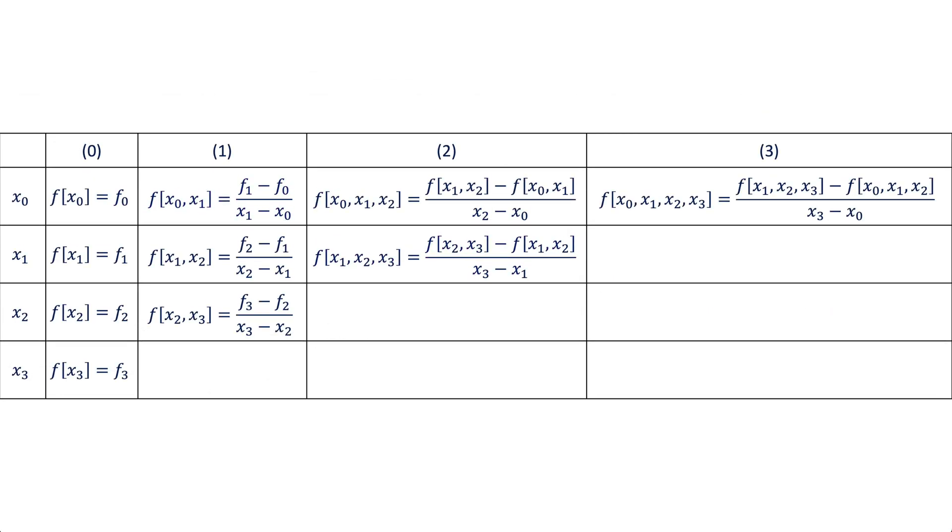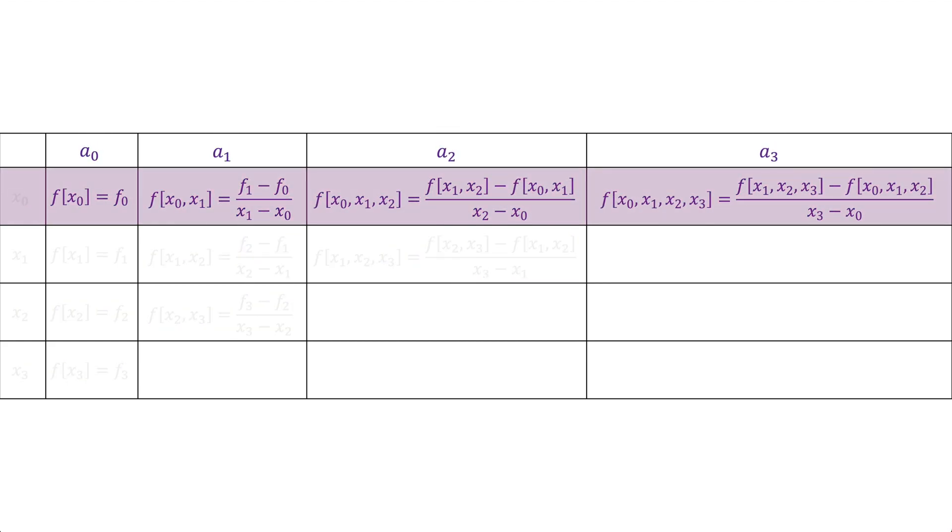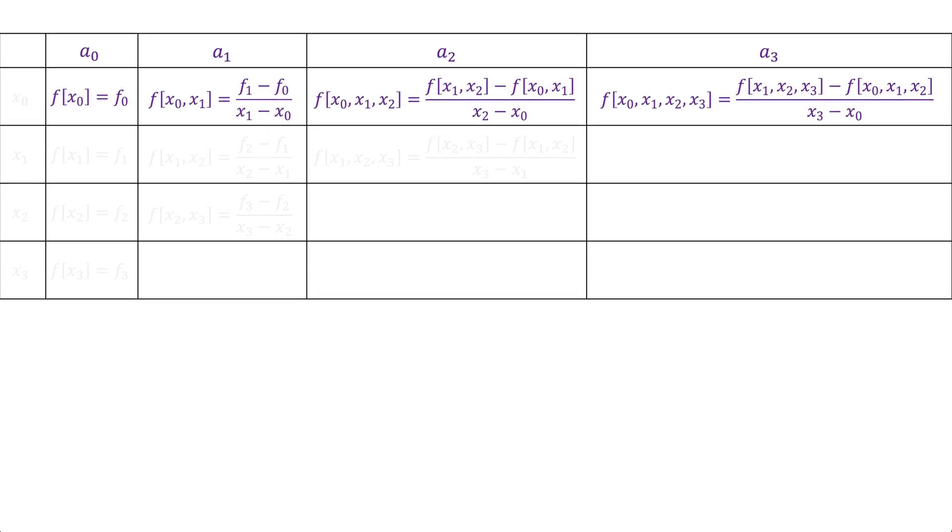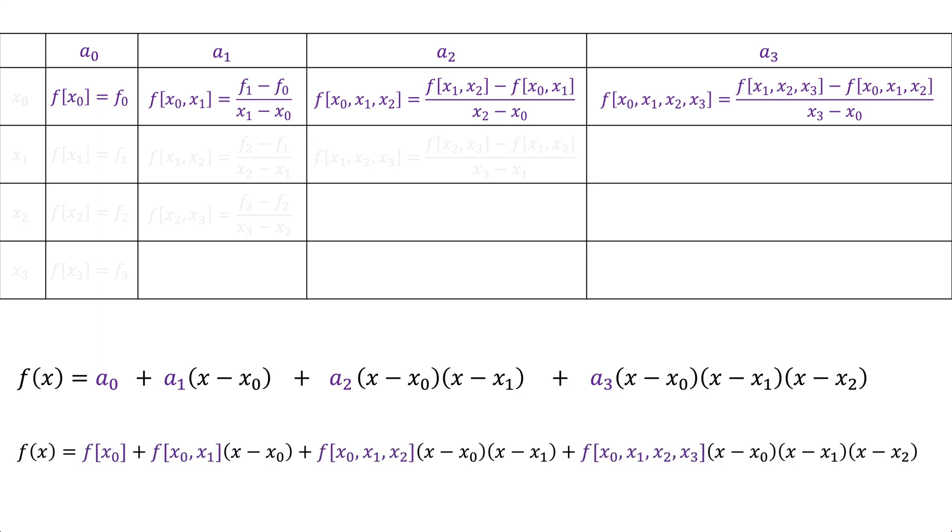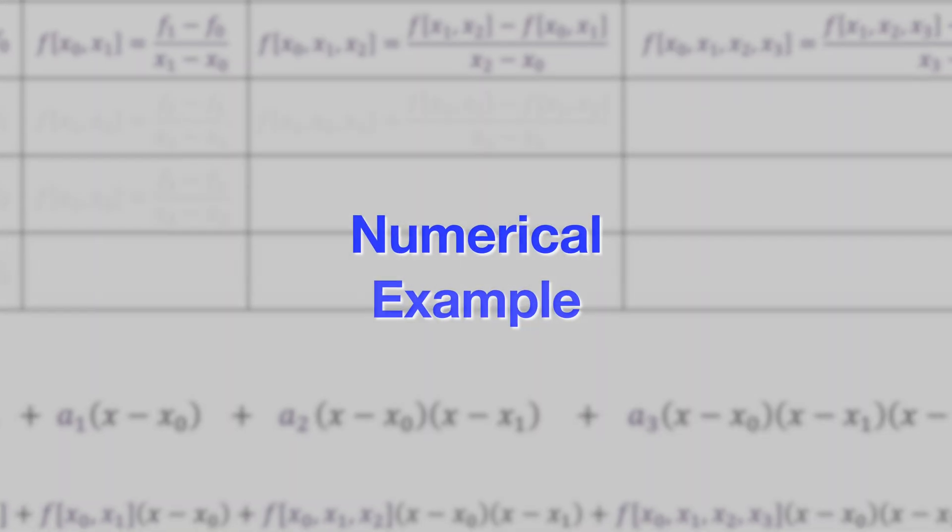The table can also be organized in a compact form. So each calculated value is shifted up to the level of its upper term of x. Consequently, the values of the coefficients are now in the top row. And as a result, we can directly substitute f values or the differences from the table into Newton's polynomial of degree three, as we see here.